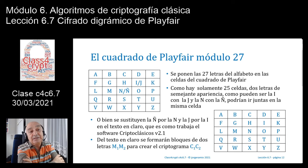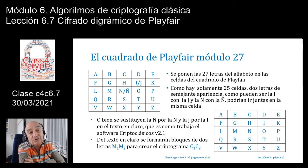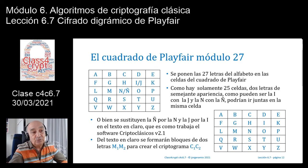Como veis, tenemos la matriz donde ya hemos puesto que la i y la j son la misma y que la n y la ñ también son la misma. Está el alfabeto desde la A hasta la Z sin ningún tipo de clave. Lo que habría que hacer para que esto funcione y tenga una cierta seguridad es añadir una clave, de modo que esas letras que están ordenadas desde la A, la B, la C... se desordenen para que la clave le dé seguridad al sistema de cifra.